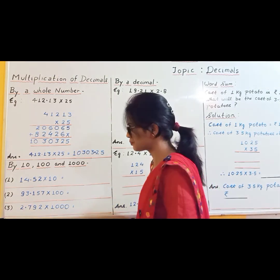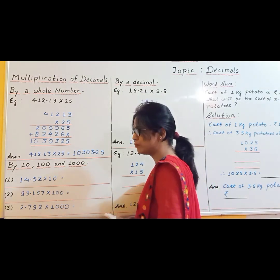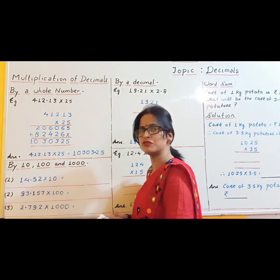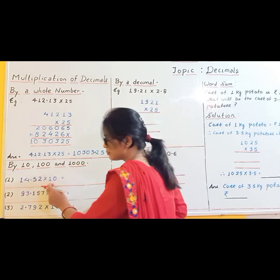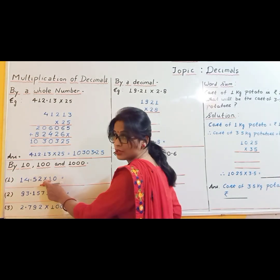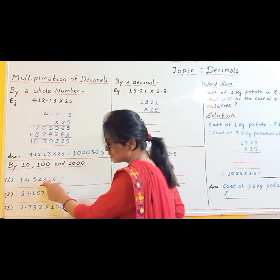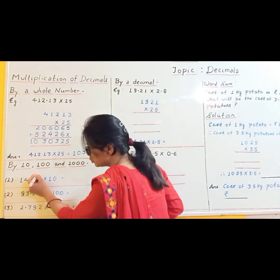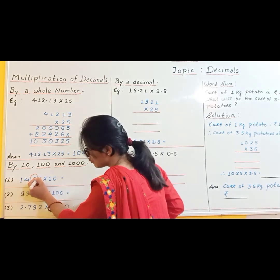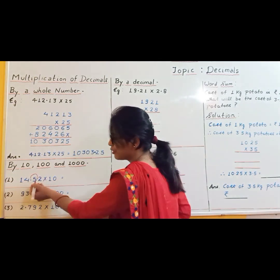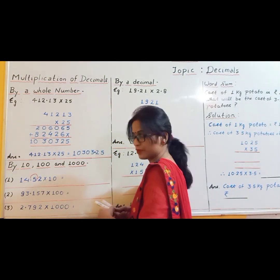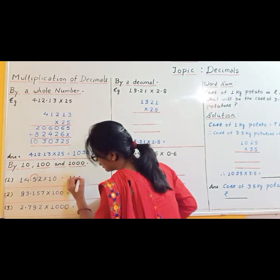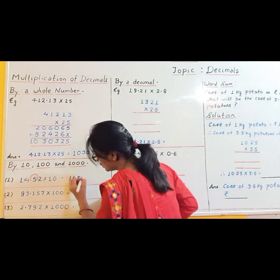Now see the example: 40.52 into 10. As I told you, according to the number of zeros — here there is one zero in 10 — the decimal will be shifted to the right-hand side by one place. So the answer will be 405.2.